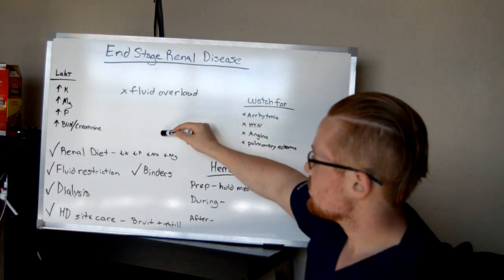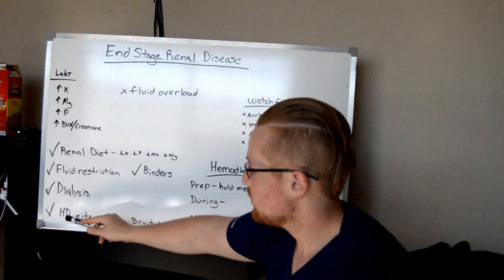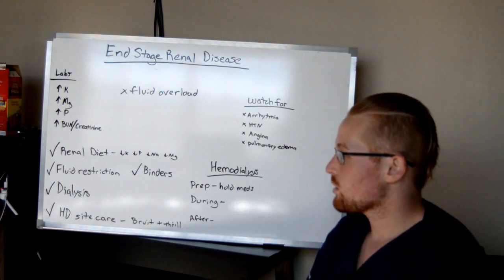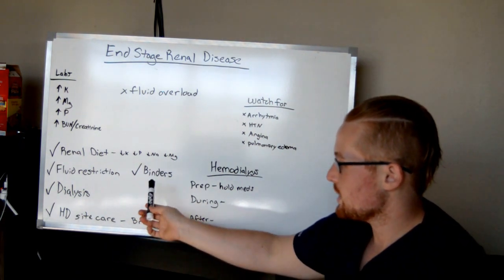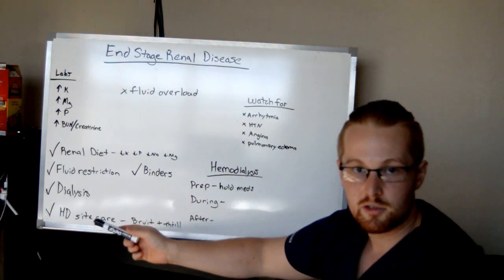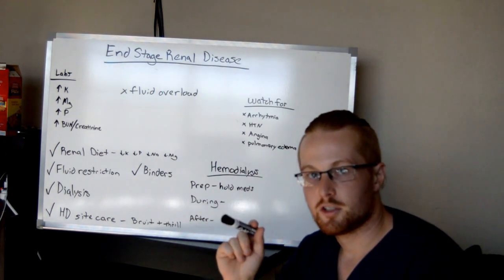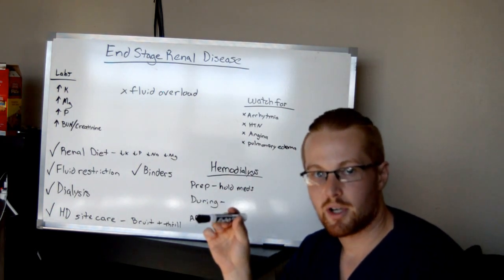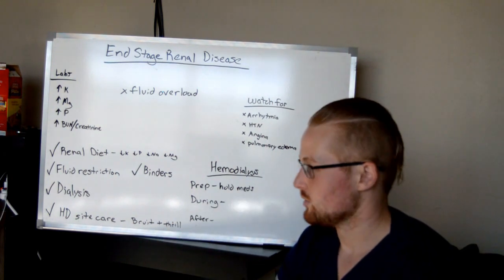Now these patients, treatment for these patients typically involves dialysis. Now there are several varieties of dialysis, the two major would be hemodialysis and peritoneal dialysis. Today I'll talk a little bit about hemodialysis. And I'm going to have another video you'll see later in this playlist talking just about hemodialysis, care before, after, during, and different types of accesses.